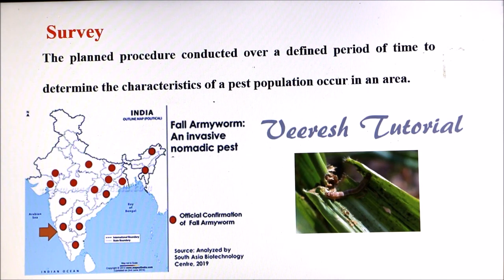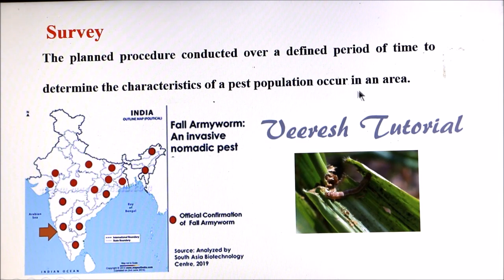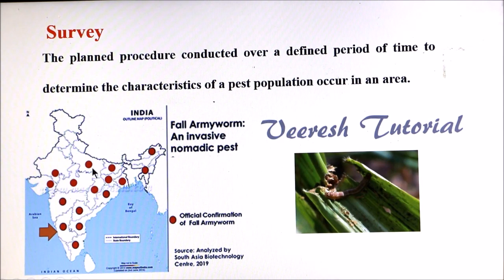Pest survey is a planned procedure conducted over a defined period of time to determine the characteristics of the pest population occurring in an area. Characteristics of a pest population means how the pest population is increasing or decreasing in an area. For example, fall army worm is a recently introduced invasive pest into India, distributed in different states of the country, which is monitored through pest survey.